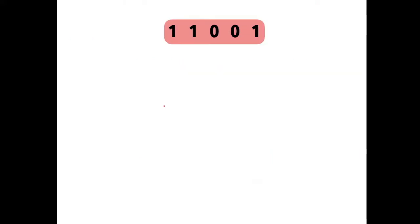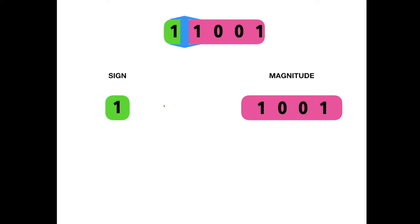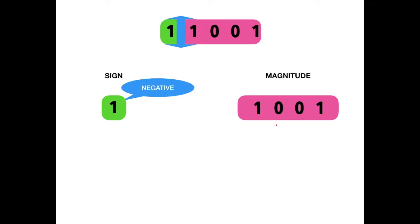The example is a 5-bit number represented in sign magnitude form: 1 1 0 0 1. Let's separate it into the sign part and the magnitude part. The sign bit is 1 so it is negative. The magnitude is 1 0 0 1. Now we have the magnitude in binary and we need to find the decimal equivalent.